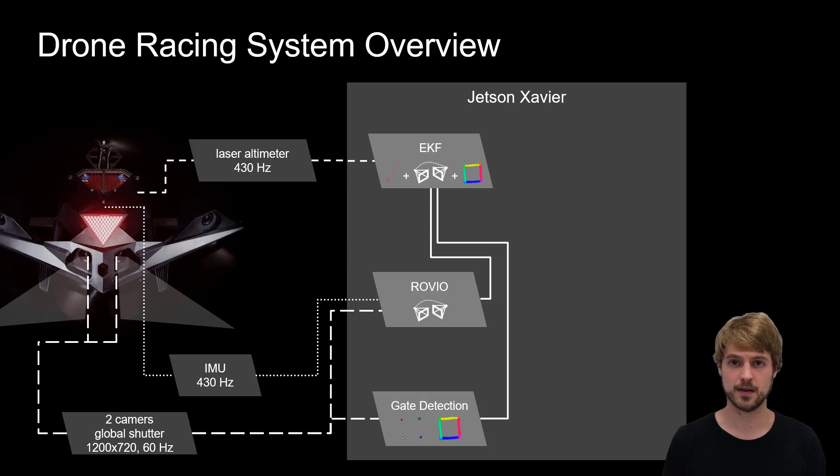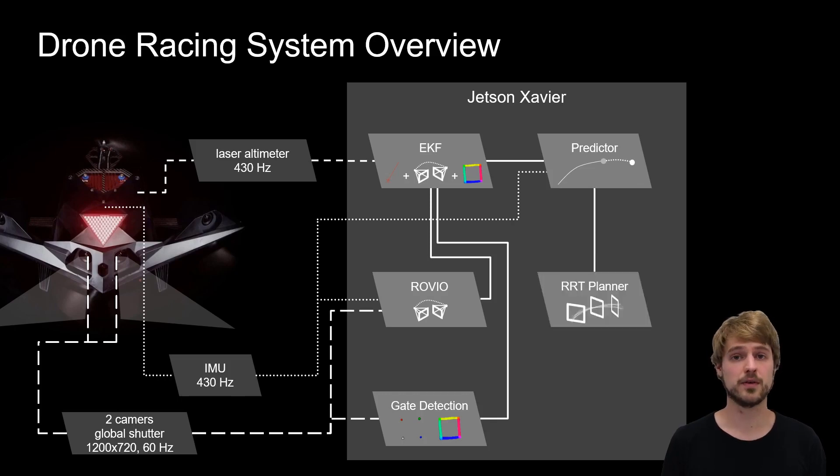This improved estimate is then predicted forward in time using the IMU measurements to compensate for delays, and we use an RRT planner to obtain near-time optimal trajectories, which we can execute with a PID controller.